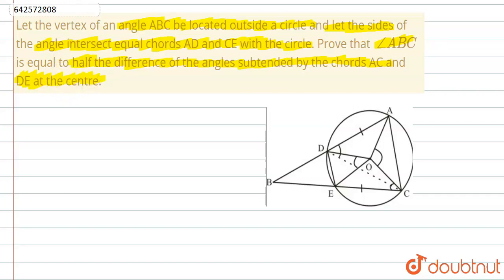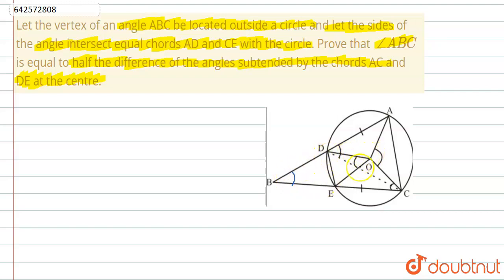This is our figure, and in this figure we can clearly see that the vertex of angle ABC — the B vertex — is outside the circle. The sides of the angle intersect the equal chords: chord AD and chord EC, both of which are equal. We need to prove that angle ABC equals half the difference, that is, half of angle DOE minus angle AOC equals angle ABC.